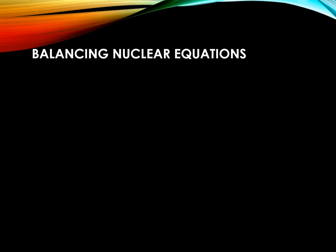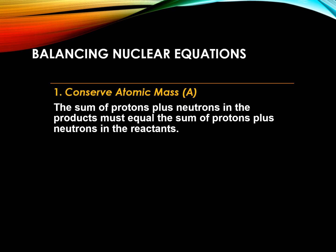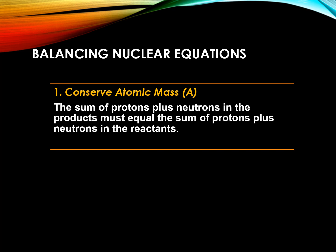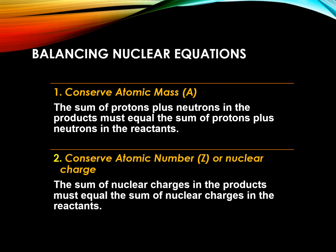Writing a nuclear reaction equation is a bit different from writing equations for chemical reactions. You need to know the symbols of chemical elements and must indicate the protons, neutrons, and electrons — specifically the number of protons and neutrons of every species in the reaction equation. Here are the rules to follow in balancing a nuclear equation. Rule one is conservation of atomic mass A: the sum of protons plus neutrons in the products must equal the sum in the reactants. Rule two is conservation of atomic number Z, or nuclear charge: the sum of nuclear charges in the products must equal the sum in the reactants.